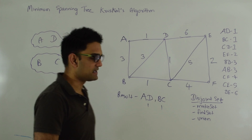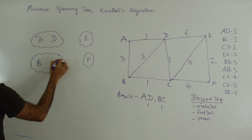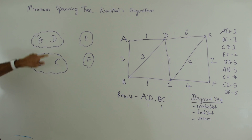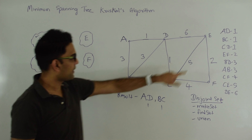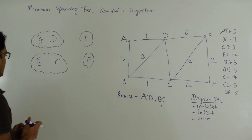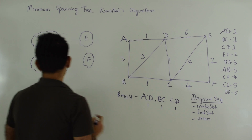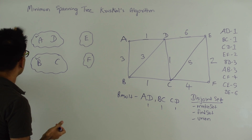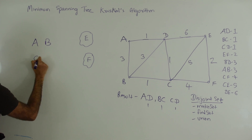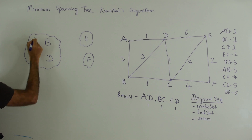Then we're going to pick edge CD. Let's say the disjoint set containing A and D is represented by A, and the disjoint set containing B and C is represented by B. We do a find-set on C and C belongs to set B, and we do a find-set on D which belongs to set A. So they are in two different disjoint sets. We pick CD for the final result and do the union of these two sets, giving us one set {A, B, C, D} represented by A.